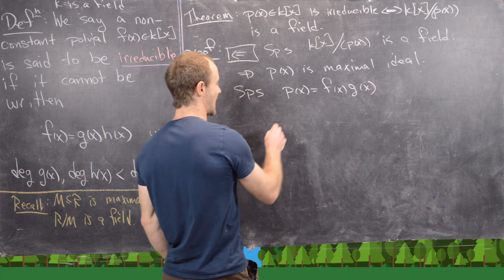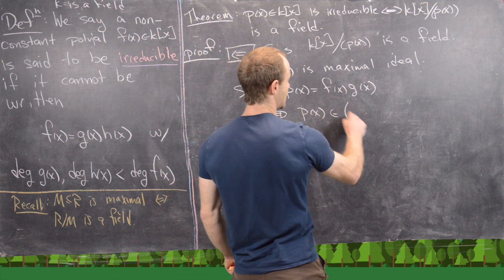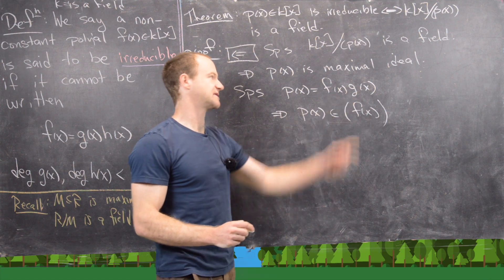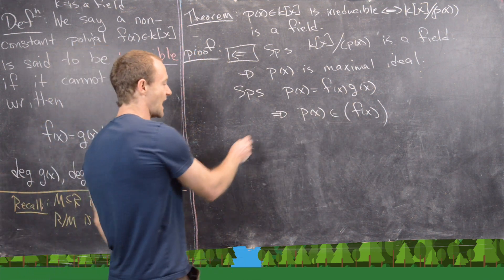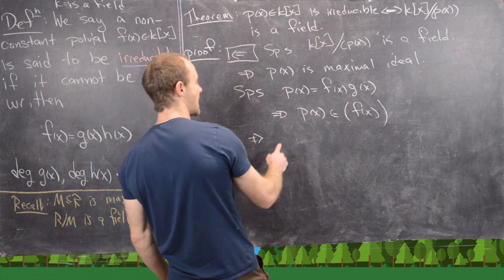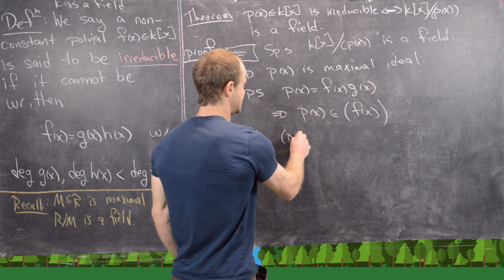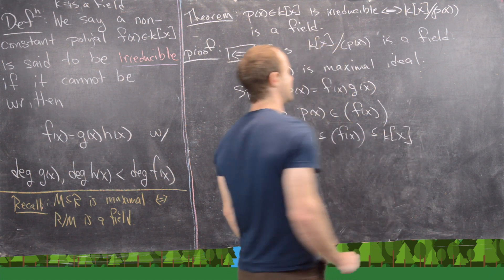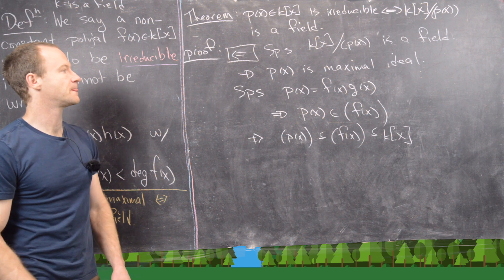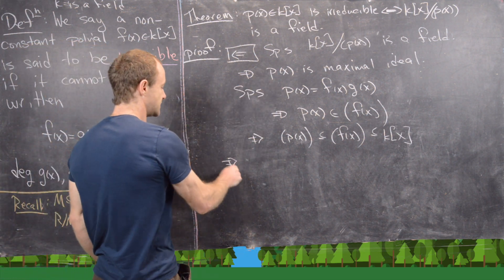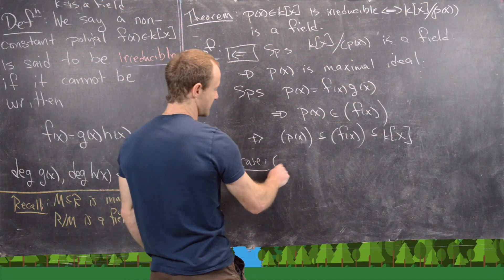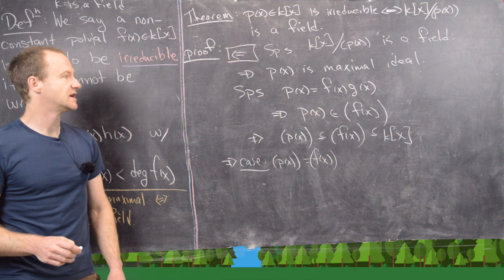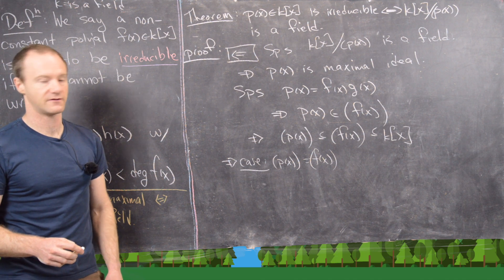Notice that if we have this factorization, p(x) is an element of the principal ideal generated by f(x) — it's a g(x) multiple of f(x). That gives us this string of ideals: (p(x)) is contained in (f(x)), which is contained in the entire ring k[x]. Since (p(x)) is a maximal ideal, that gives us two cases: either the principal ideal generated by p(x) equals the principal ideal generated by f(x), or the principal ideal generated by f(x) equals the whole ring.